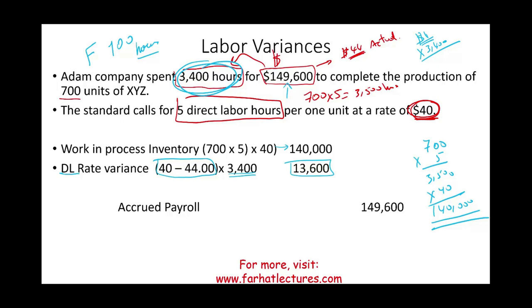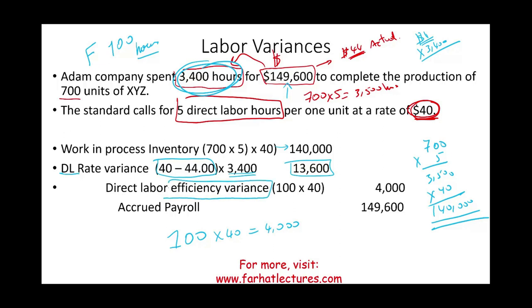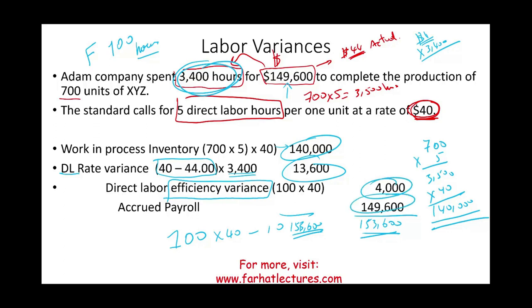We also have a direct labor efficiency variance: we saved 100 hours at the standard rate of $40 = $4,000 favorable, recorded as a credit. Always make sure your journal entry balances — debits and credits should both total $153,600 in this example. It's always good to verify your journal entries are balancing.